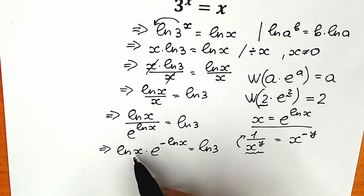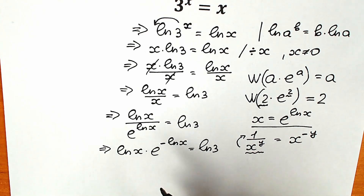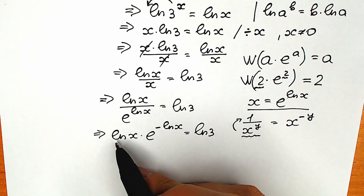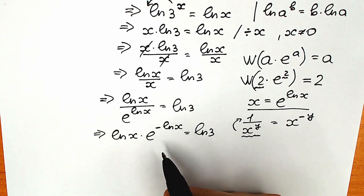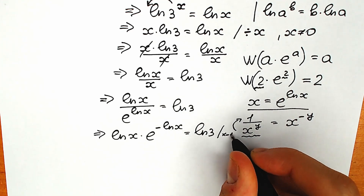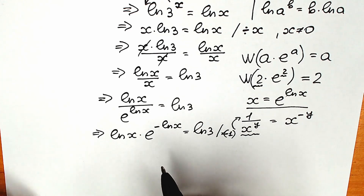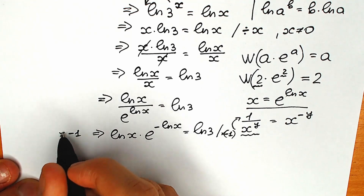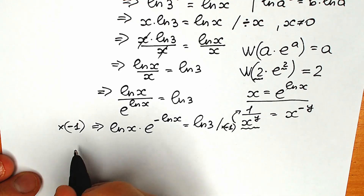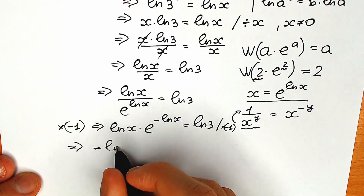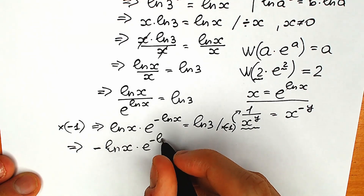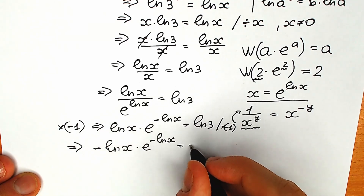Let's look closely. We have natural log x and minus natural log x — those are not the same, so we cannot apply the Lambert W function yet. To make them the same, we multiply both sides by minus 1. As a result, we have minus natural log x times e to the power minus natural log x equal to minus natural log 3.